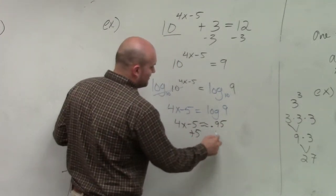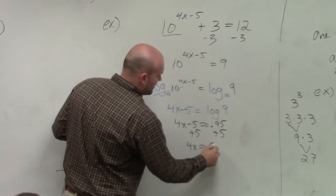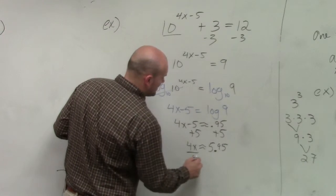Then add 5 to both sides. 4x is approximately 5.95, then divide by 4.